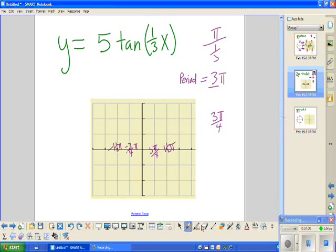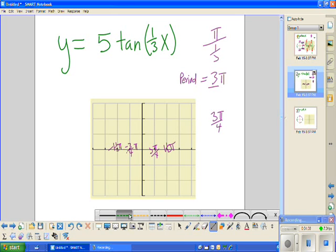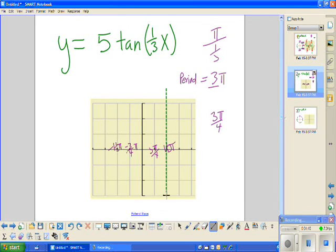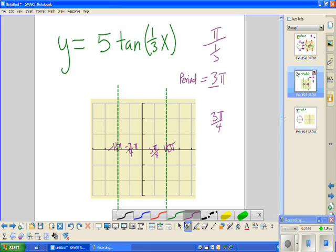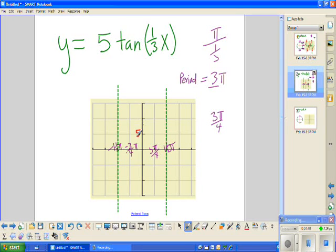This is part of the difficulty of this. Because we know our asymptotes go on either end. Now we also know that our amplitude is here. We are at halfway in between our middle and our first asymptote, we have our amplitude.